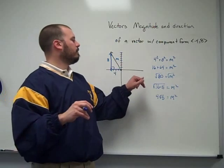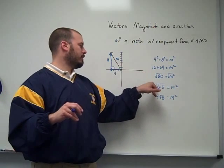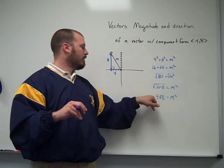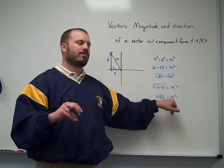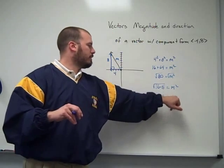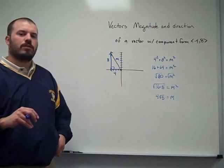Okay, so I've got my magnitude, the square root of 80, which is the same as 16 times 5. The square root of 16 is 4, so 4 root 5 is equal to m. So I've got my magnitude for this.